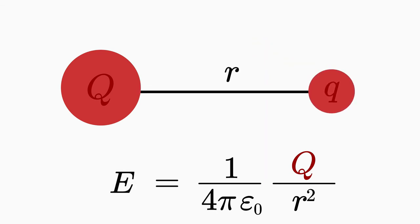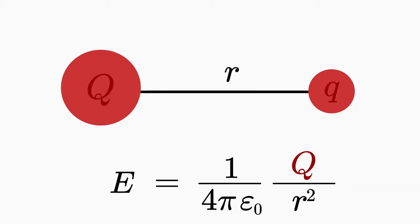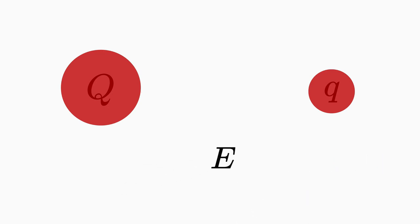So far, only the magnitude — that is, the strength of the electric field — has been considered, without taking into account the exact direction of the electric field. However, the Maxwell equations are general and also include the direction of the electric field. So we have to turn the electric field into a vector. Vectors are shown in boldface, or handwritten with a little arrow above the letter to distinguish them from scalars.